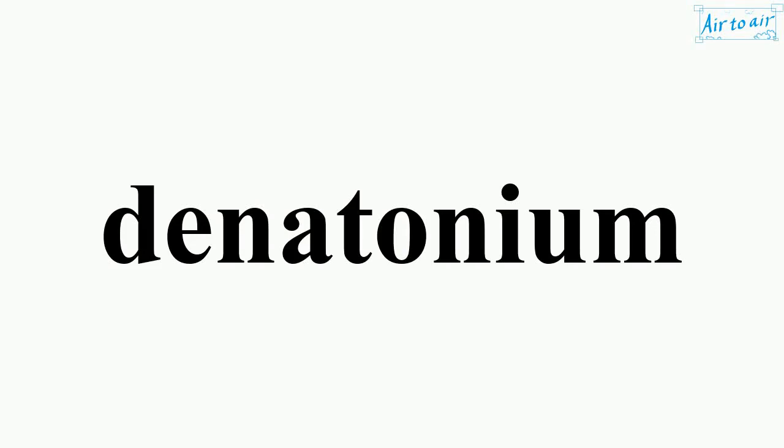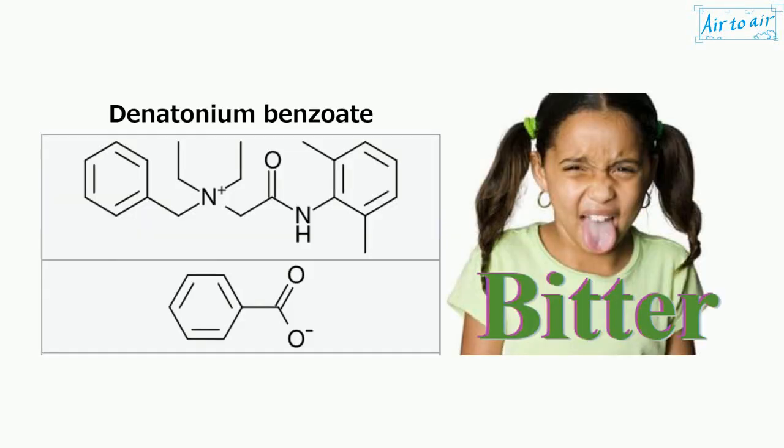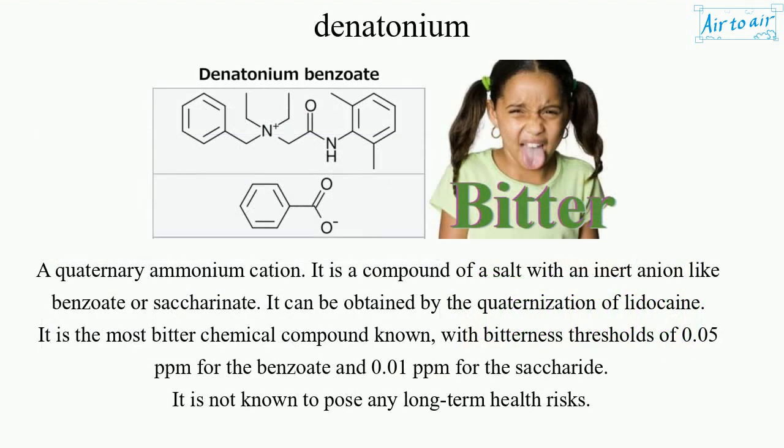Denatonium is a quaternary ammonium cation. It is a compound of a salt with an inert anion like benzoate or saccharinate. It can be obtained by the quaternization of lidocaine. It is the most bitter chemical compound known, with bitterness thresholds of 0.05 ppm for the benzoate and 0.01 ppm for the saccharinate.